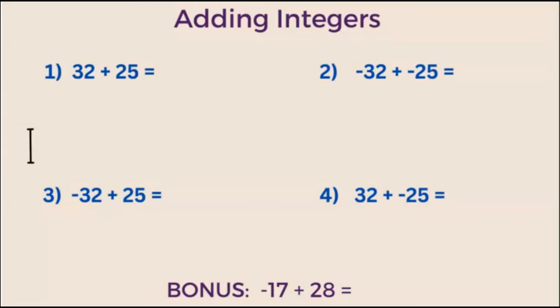The first example is adding two positive integers. This is as straightforward as it can get. It's adding two numbers together, which hopefully by now you all can do. 32 plus 25 is 57. When you are adding two positive integers, your answer will always be positive.